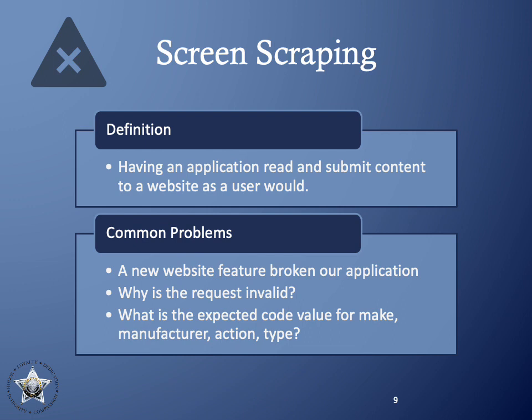Second, if any of the data you submit isn't valid, you have no way to easily tell which field is wrong and why. Third, firearm and background checks rely on very specific code values to be sent in, and it can take a lot of backwards engineering to determine what the expected values are.